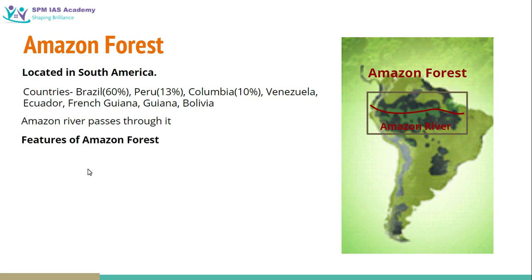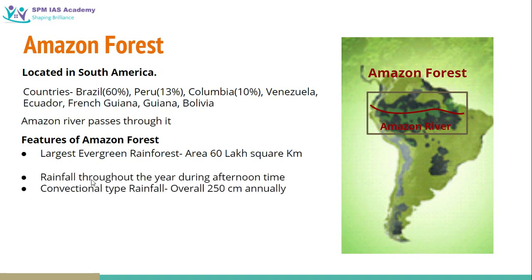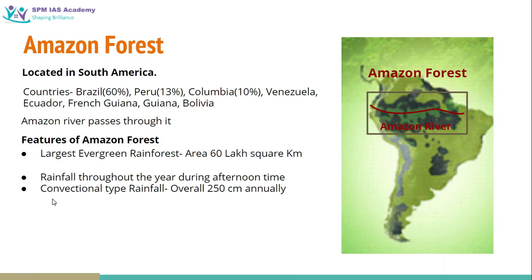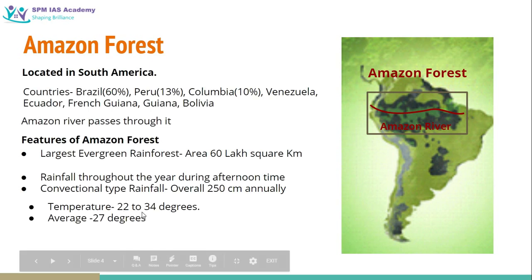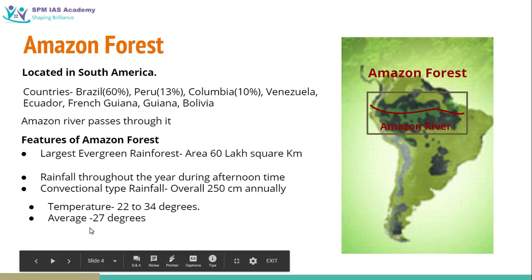Let us have some brief idea about the features of Amazon forest. It is the largest evergreen rainforest, having an area of about 60 lakh square kilometers. Rainfall happens throughout the year, especially during the afternoon time. Convectional rainfall happens in this area because it is located in tropical areas around the equator, and rainfall overall is about 250 centimeters and more. The temperature ranges from 22 to 34 degree Celsius, with an average temperature of about 27 degree Celsius.